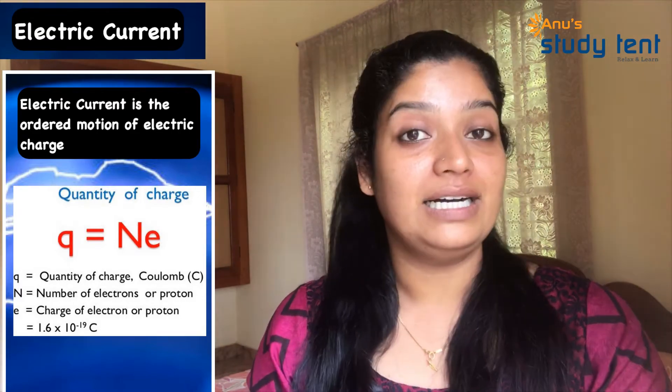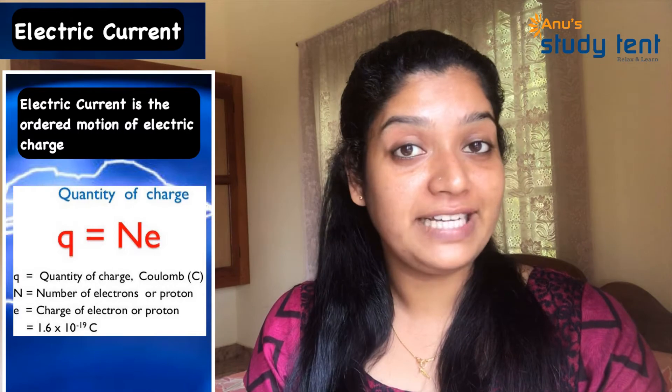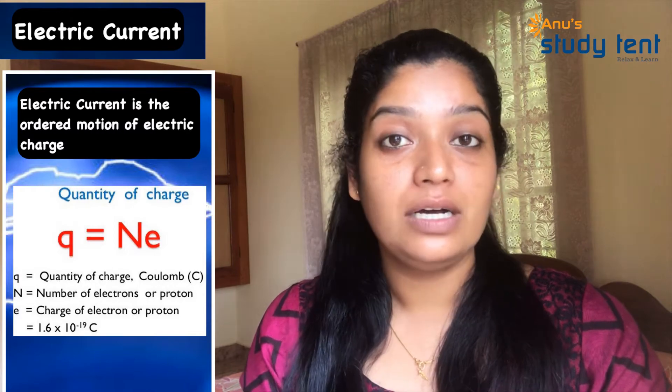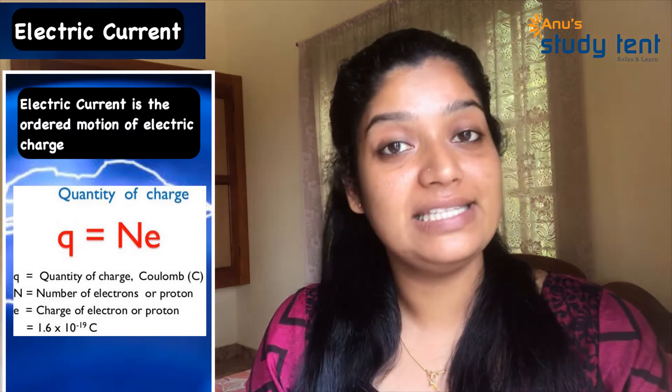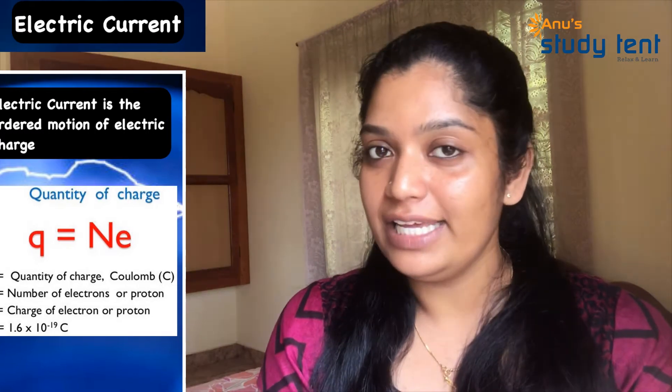The value of the charge of an electron is 1.6 × 10⁻¹⁹ coulombs.